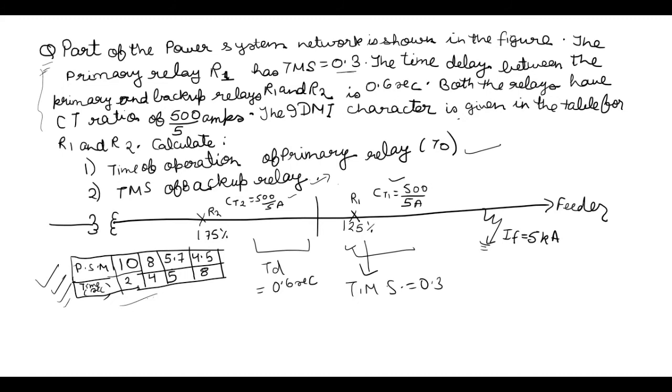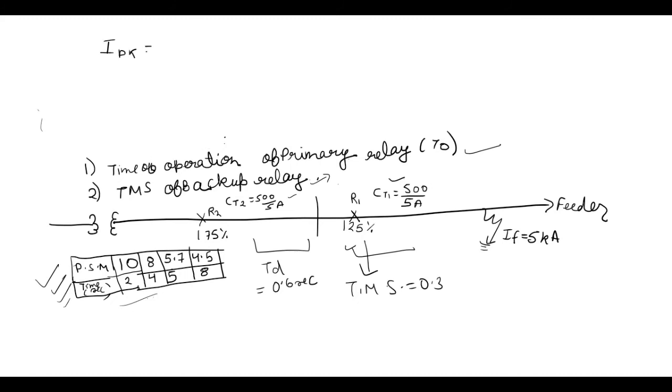So let's start this. So now we will start with the pickup current which was our first formula which is equal to percentage setting of relay. So for R1 percentage setting of relay is 125%, so 125 by 100 into CT secondary current. So by secondary current this means this 5 amperes. So this value is 6.25 amperes. And now the PSM plug setting multiplier, according to the formula it was IF into IPK into CT ratio.